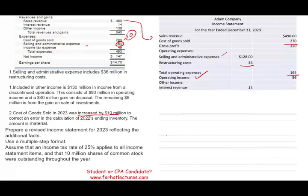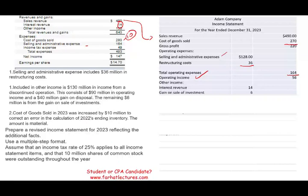Now we report other income separately. They have interest revenue of $14 million and a gain on sale of investments of $6 million, giving total other income of $20 million. Interest revenue and gain on sale of investments are reported separately from operating results because any company could have these items regardless of how well they operate. When you invest in a business, you invest based on its operating performance, not on other income.